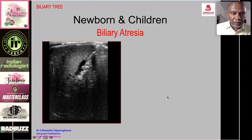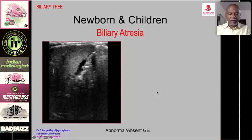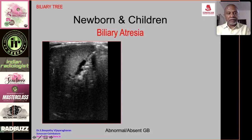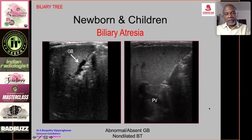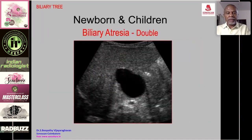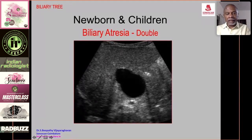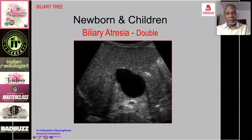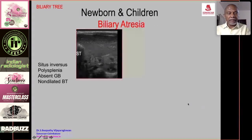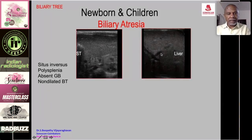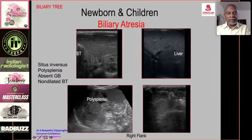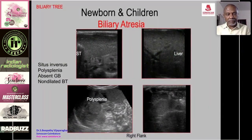Jaundice in the newborn and children: biliary atresia is a major concern. Ultrasound may show an abnormal or absent non-visualized gallbladder. The portal vein is seen but no dilated biliary tree — a non-dilated biliary tree with an abnormal or absent gallbladder is diagnostic of biliary atresia. Rarely a large cyst in the hilum may mimic a choledochal cyst due to double atresia — proximal and distal — with secretions distending the common duct. Situs inversus polysplenia syndrome with a jaundiced child is almost always biliary atresia.